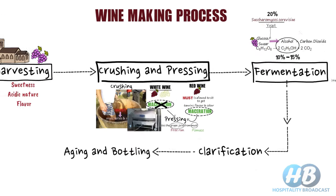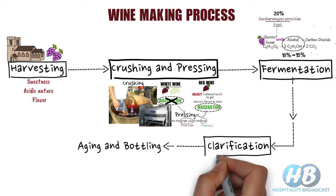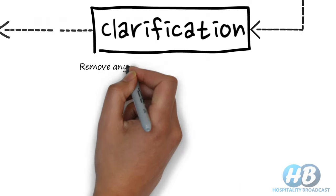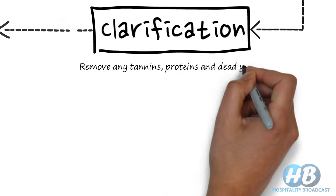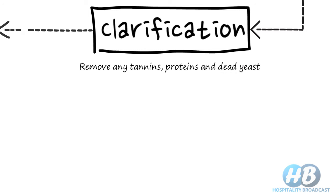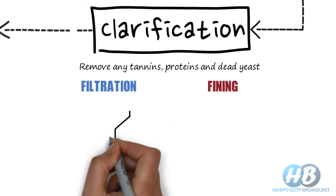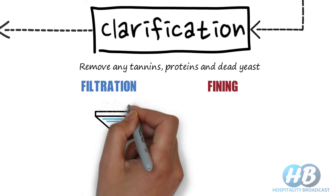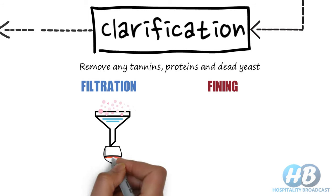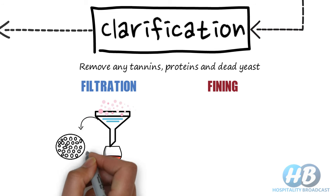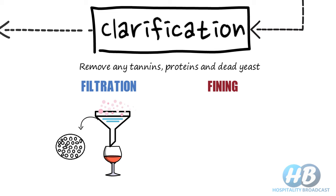Once the fermentation process is completed, the clarification process begins. In this process, we remove any tannin, proteins, and dead yeast from the wine. For clarification, we can either go for filtration or fining treatment. In filtration, we pass the wine through a coffee filter-like material which consists of a series of very small holes or pores. These holes work as a filter and only allow liquid and particles small enough to fit through. Large particles are held back and removed from the liquid.